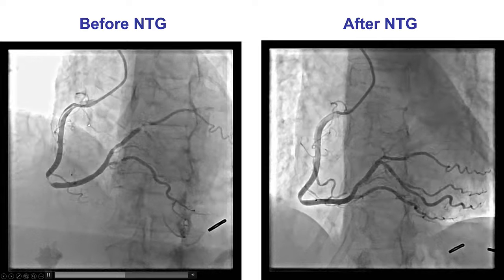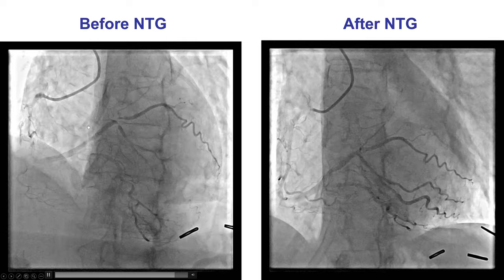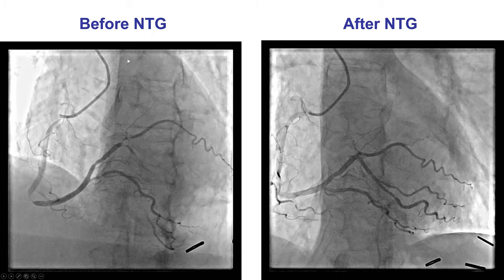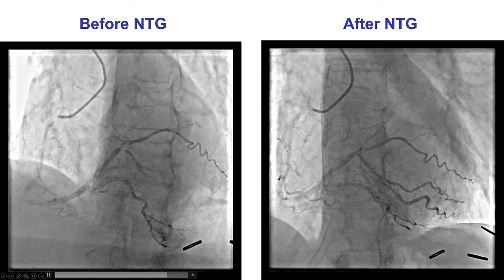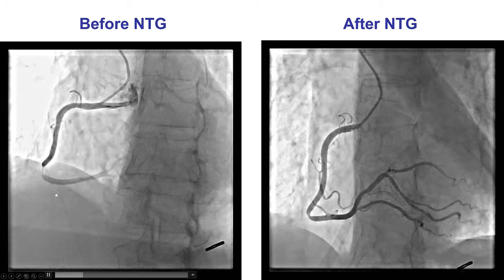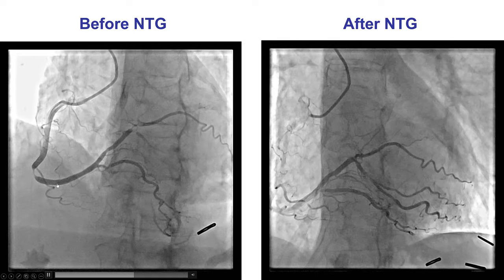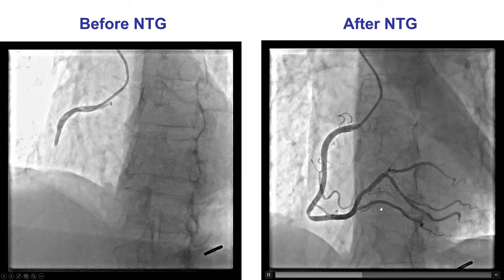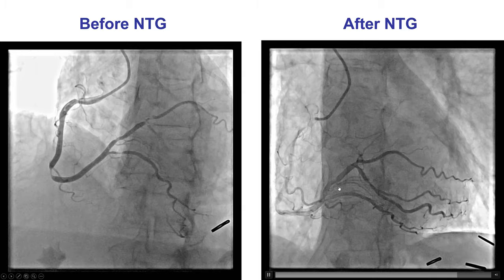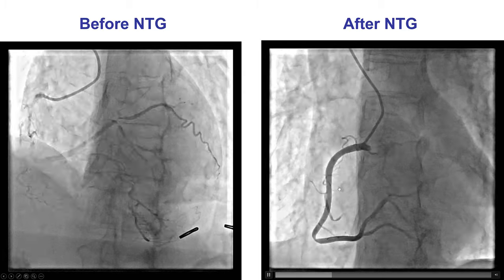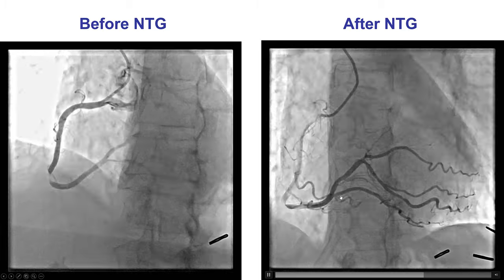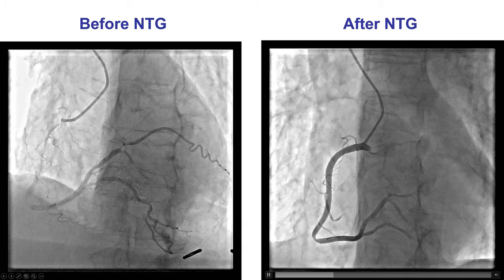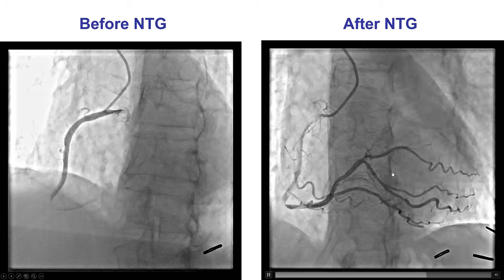Another key piece of information before assessing the coronary artery is to know whether nitroglycerin was given. This is an example of multifocal spasm where multiple lesions resolve after nitro is given. That is why every angiogram should be done after nitroglycerin is administered, to avoid falsely calling stenoses that are not present but simply represent spasm.